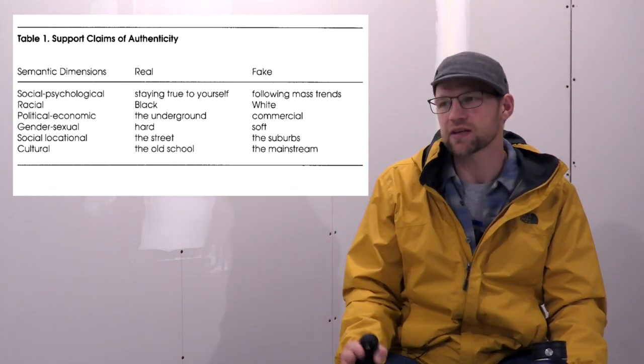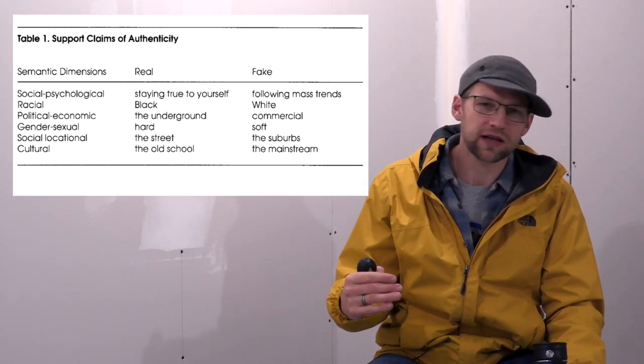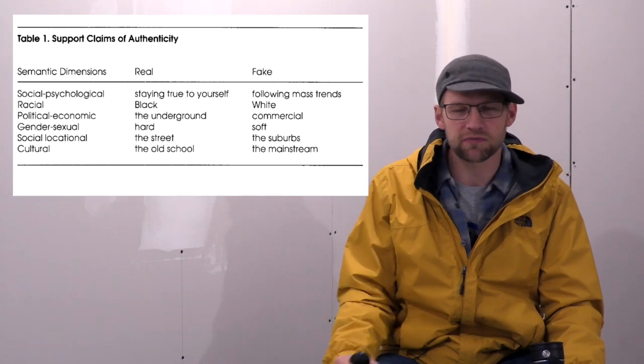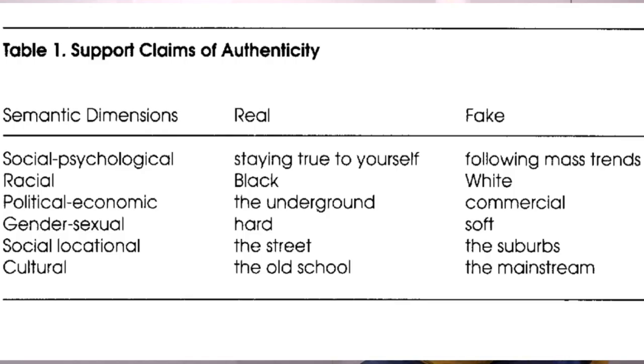And this is based upon, again, reviewing interviews and interview data that he collected by talking to people, looking at interviews and press, and looking at song lyrics. So social-psychological: what it means to be real is that you stay true to yourself. And what it means to be fake is that you follow mass trends. And so, I mean, just look at, it's hard to say what does staying true to yourself mean, right? But following mass trends, I mean, you see that in the music biz now, in rap, rap broadly defined, right? Someone puts out a sound that's hot, that moves, that people buy, that people party to, whatever. And then other artists keep, they mimic that vibe and that style.